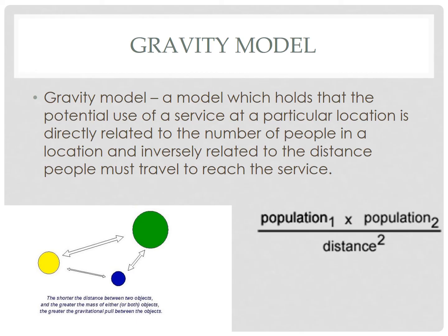We'll finish up tonight with the gravity model, which holds that the potential use of a service at a particular location is directly related to the number of people in a location and inversely related to the distance people must travel to reach the service. The gravity model predicts interaction, whether that is customers to a store or migrants to a particular country, and that interaction is based on two factors: the population sizes of the two places and the distance between them.